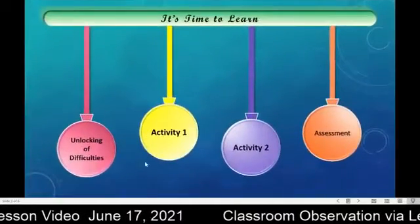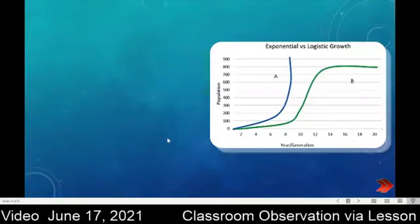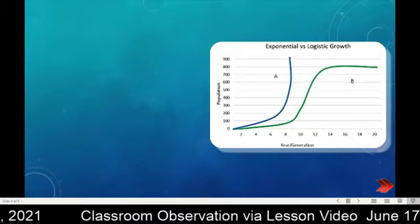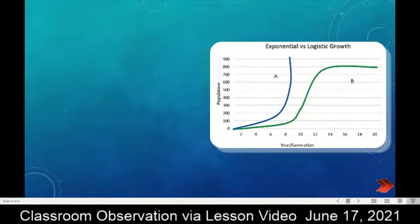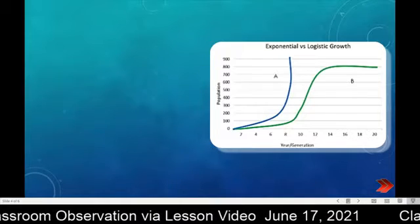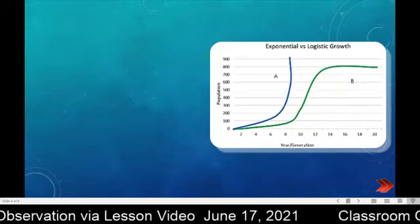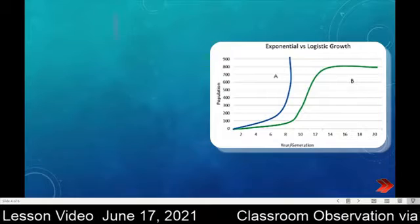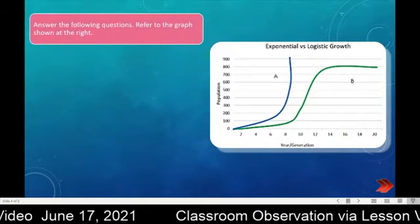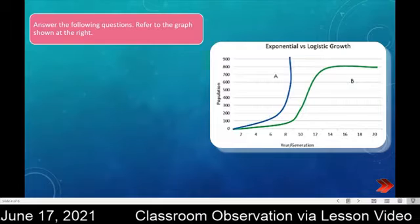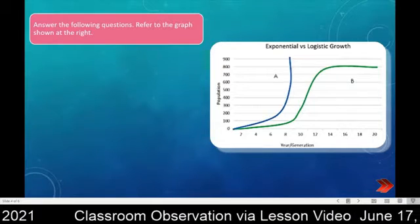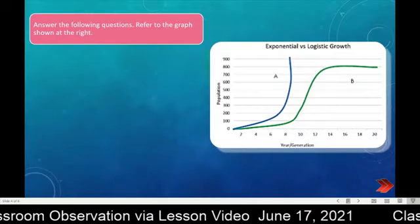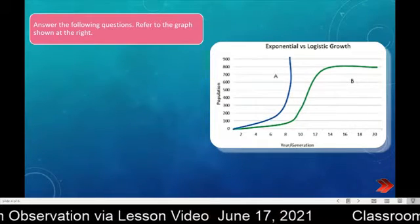Now let's proceed to the first activity. We can see a graph of exponential versus logistic growth. On the vertical axis, the population ranges from 0 to 900, and the year or generation is on the horizontal axis. There are two curves: curve A and curve B. Please study or examine the graph shown, and write your answers on your notebook or any clean sheet of paper.